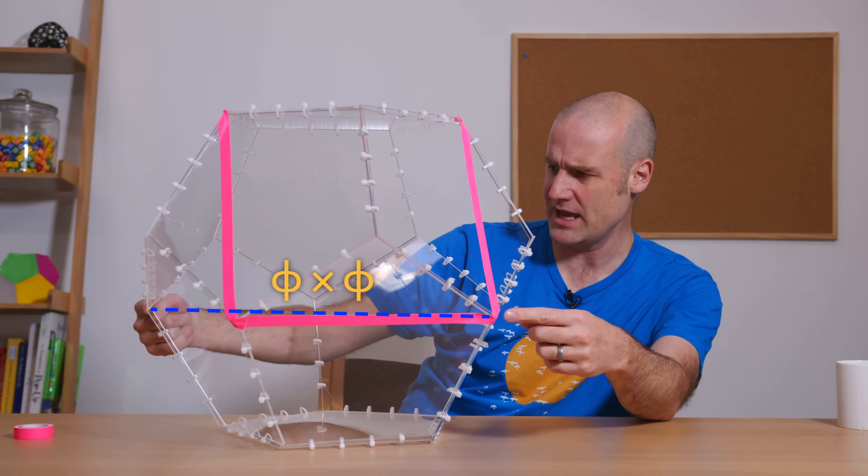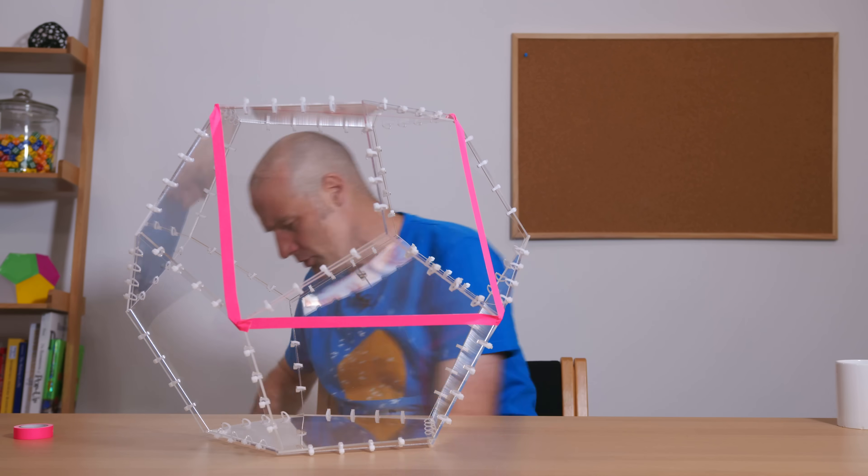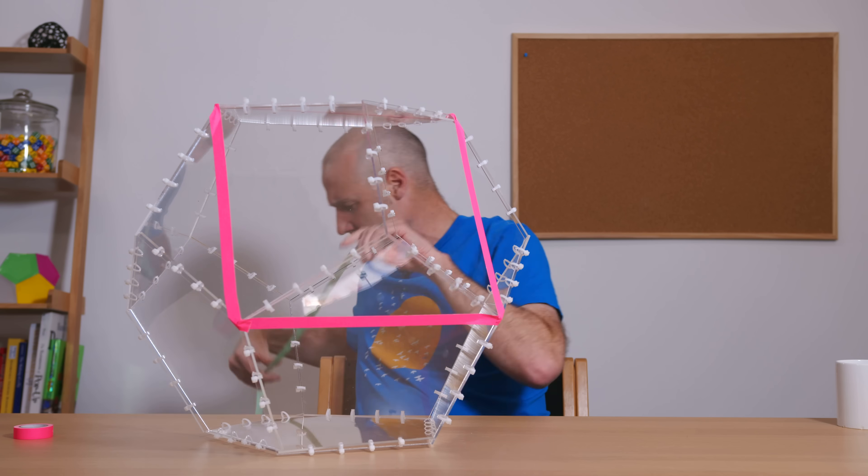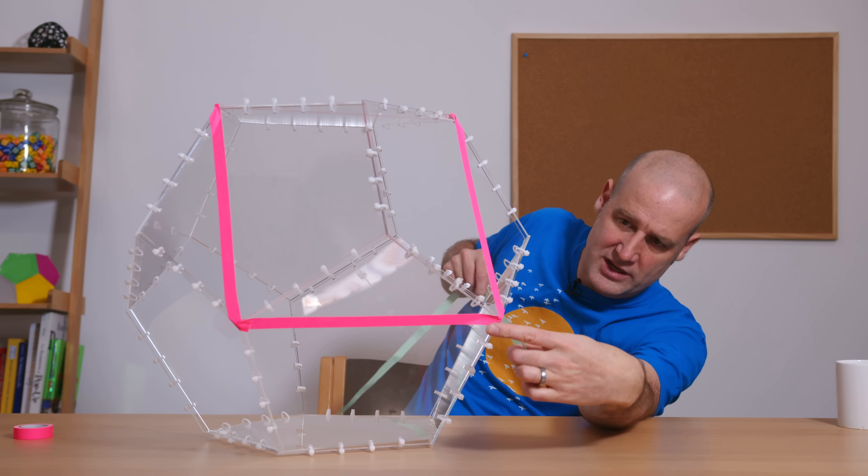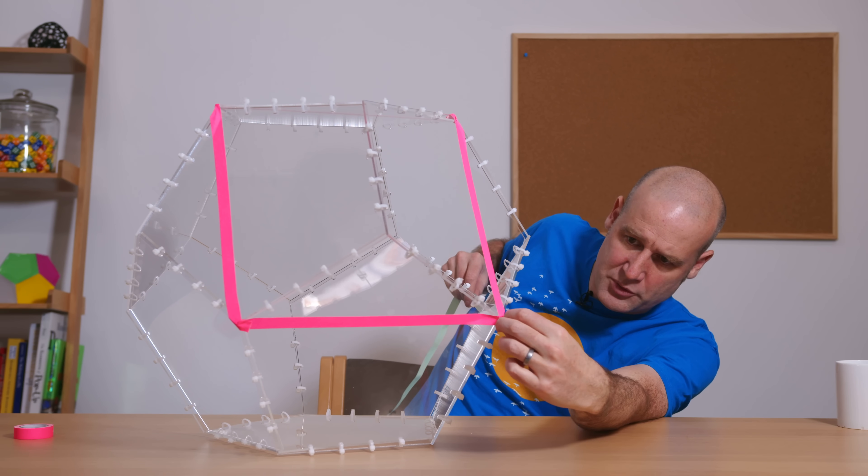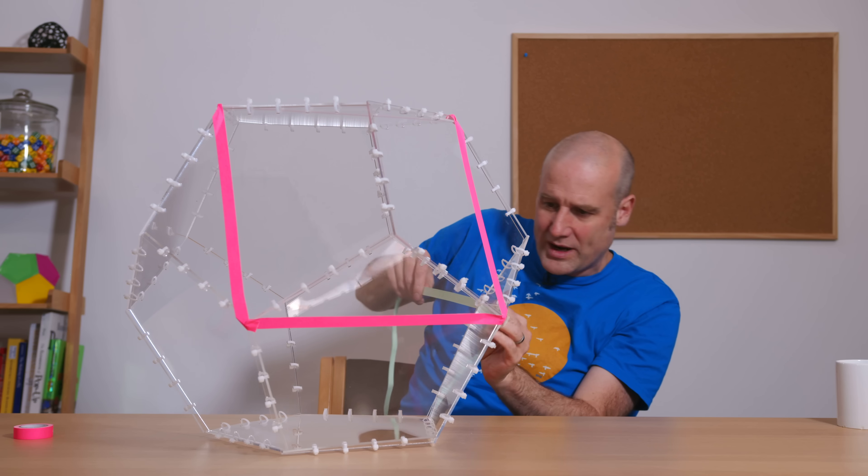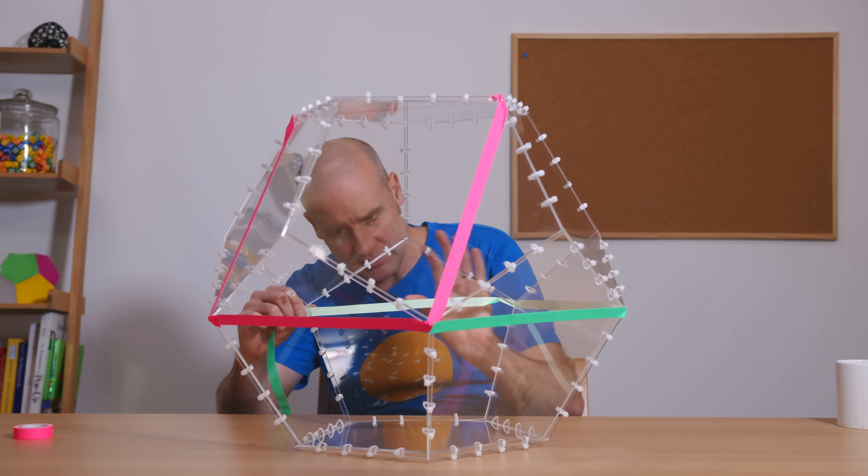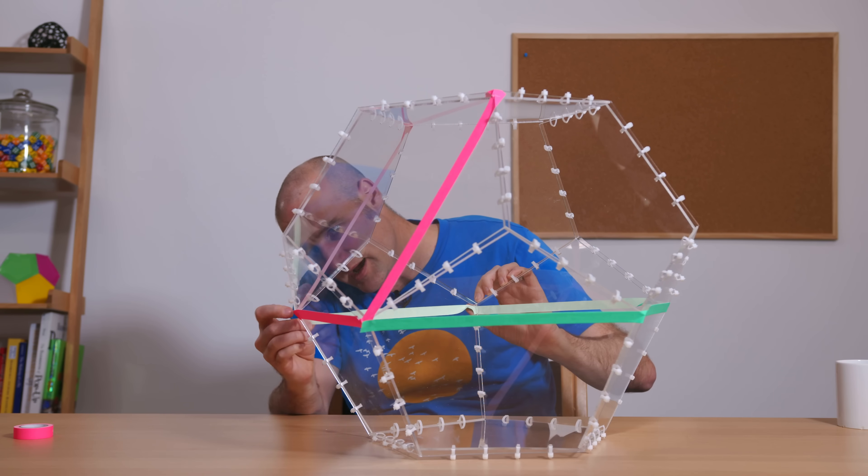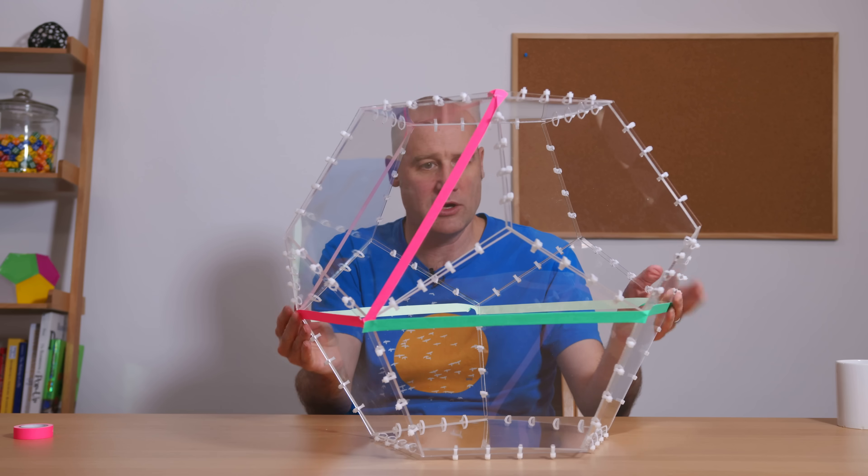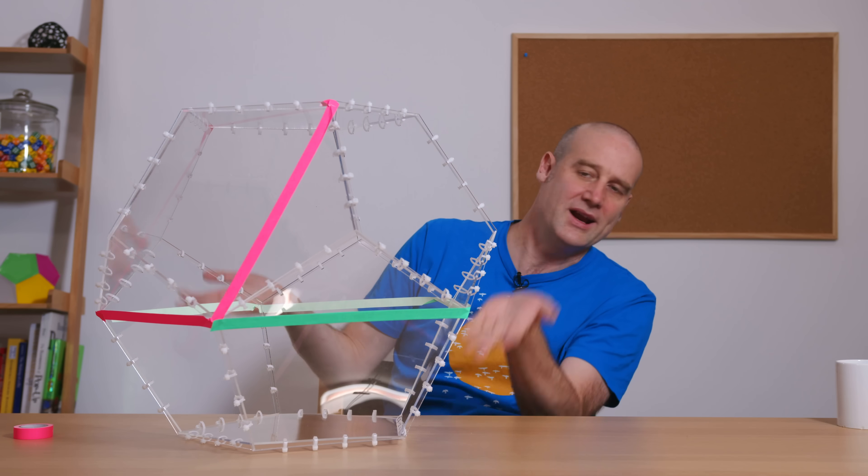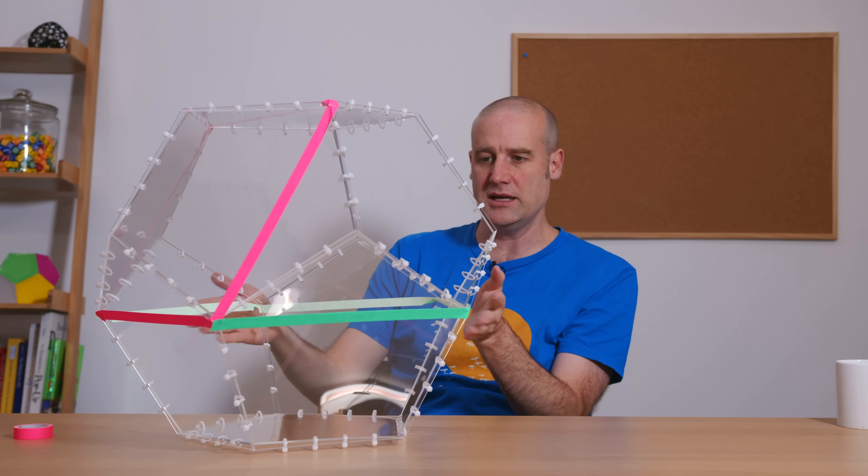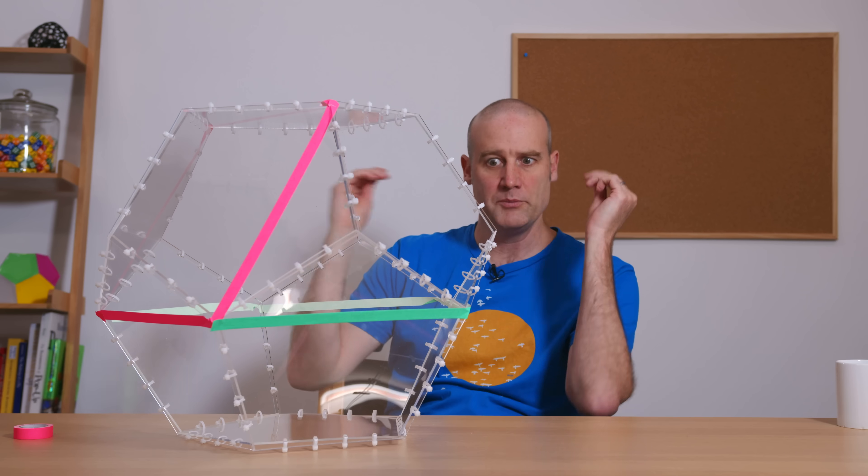So that actually means from there to there must be part of a pentagon. And we can see that if I label, I've got a long bit of green tape here. I'm going to mark in the equator of the dodecahedron. And that is a perfectly regular pentagon.